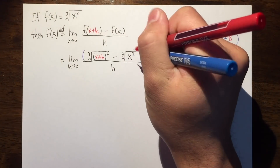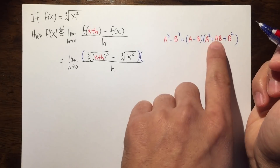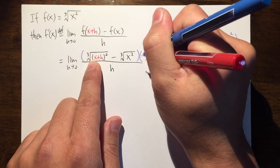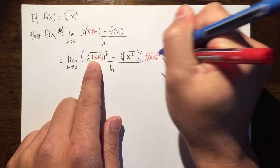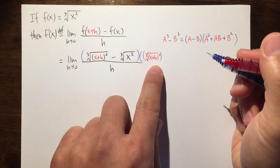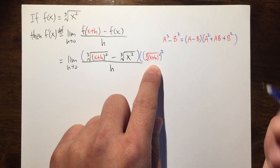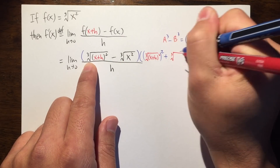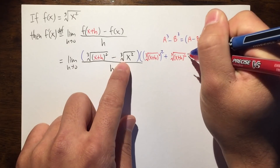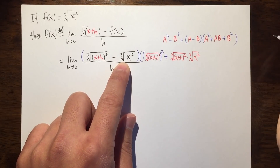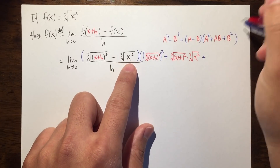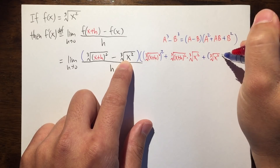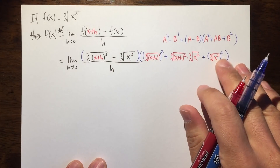So let's go ahead and do that. I will put this in blue. So on the top, I will multiply this. This is my a — I will put everything in red. So we will have the cube root of x plus h, squared. That was the a; I will have to do a squared. Then we continue. We add a times b, so this is just the cube root of x plus h squared, times the cube root of x squared. And then lastly, we add b squared, which is the cube root of x squared, and then in parentheses and then squared. So this is it for the top.